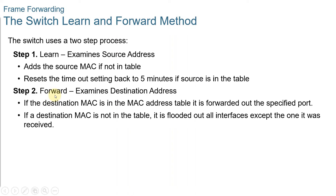Step 2 is Forward — it examines the destination MAC address. If the destination MAC address is a unicast address, the switch looks for a match between the destination MAC address of the frame and an entry in the MAC address table. If the destination MAC address is in the table, it forwards the frame out of the specified port. If the destination MAC address is not in the table, the switch forwards the frame out all its ports except the incoming port — this is called an unknown unicast. If the destination MAC address is a broadcast or multicast, the frame is also flooded out all ports except the incoming port.